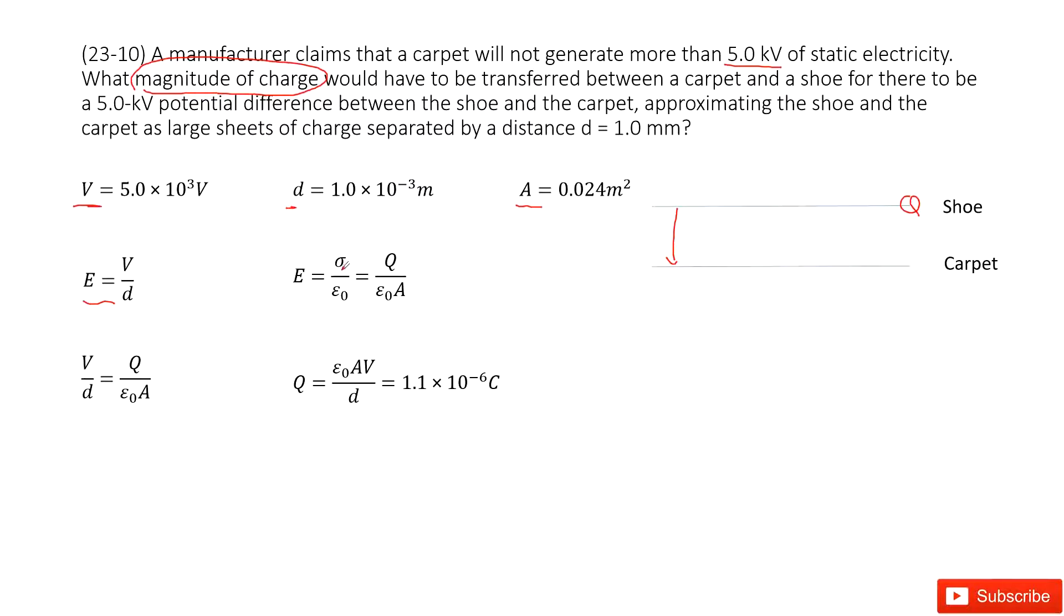E is sigma divided by epsilon naught, and this sigma is the surface charge density. So we can use Q divided by A. Now you can see the left hand side is electric field difference, the right hand is still the electric field difference. So we can get the function for Q as epsilon naught A times V divided by d.